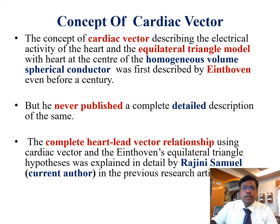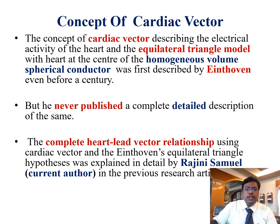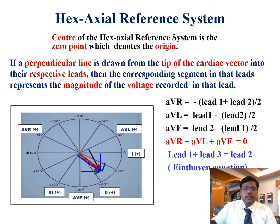The concept of cardiac vector describes the electrical activity of the heart. The equilateral triangle model with heart at the center of the homogeneous volume spherical conductor was first described by Einthoven even before a century, but he never published a complete detailed description. The complete heart-lead vector relationship using cardiac vector and Einthoven's equilateral triangle hypothesis was explained in detail in my previous research articles.